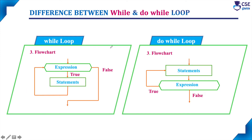Next, considering the flowchart for while loop: first the loop expression will be tested. When the loop expression is evaluated to true it will allow the body of the loop to execute. After execution, again the loop expression will be tested. If the condition is again true, one more time the body of the loop will execute. Whenever the condition fails, the loop will terminate and control will go to the next statement. Suppose the loop expression is evaluated to false in the first iteration itself, the body of the loop will not execute even one time.